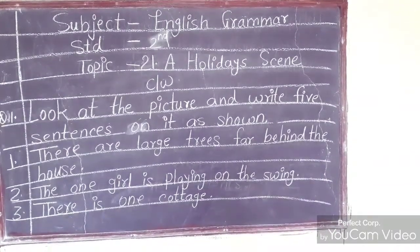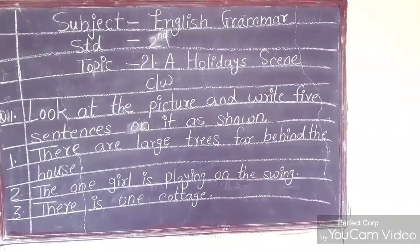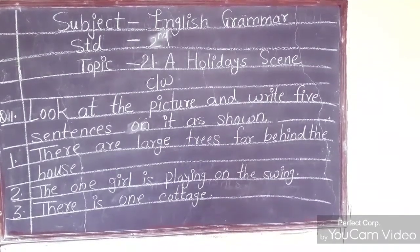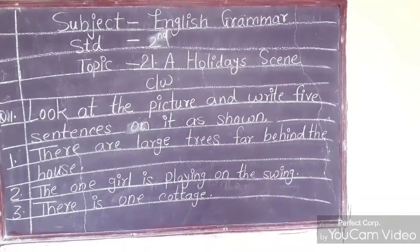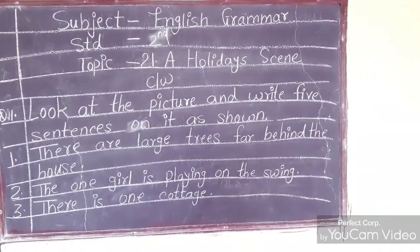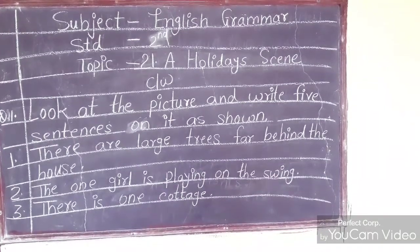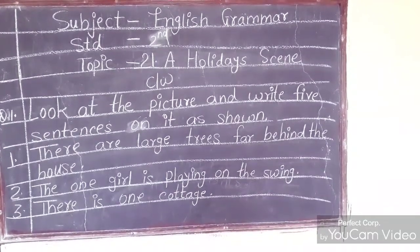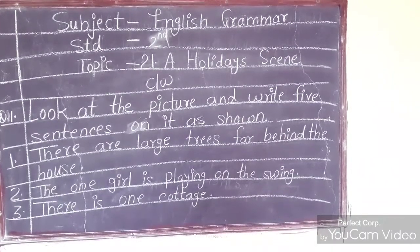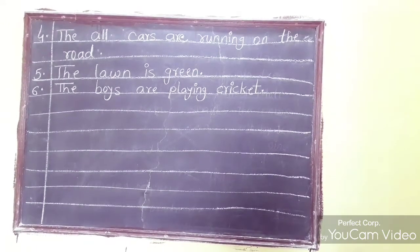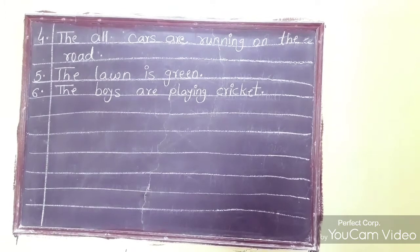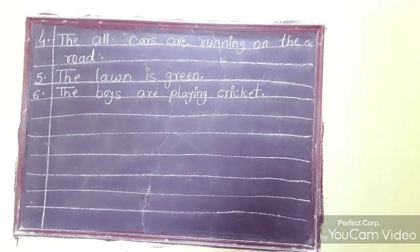Look at the picture and write five sentences on it. With the help of the video I showed you pictures, and you have to write about them. Look at the sentences already written: one — there are large trees behind the house; the one girl is playing on the swing; there is one cottage; all cars are running on the road; the lawn is green; the boys are playing cricket.